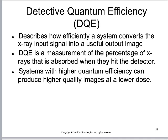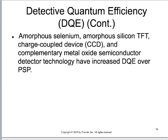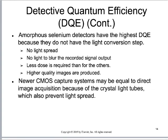This is a side-by-side comparison between computed radiography and flat panel — the reason the government wanted us to switch from computed to flat panel is because flat panel has a higher DQE. Amorphous selenium, amorphous silicon, thin film transistor systems, charge coupled devices, and CMOS devices all have a higher DQE over photo-stimulable phosphor systems. In practical terms: the Samsung is better than the Fuji. Amorphous selenium detectors have the highest DQE because they have no light conversion step, so there's no noise from light-producing parts.